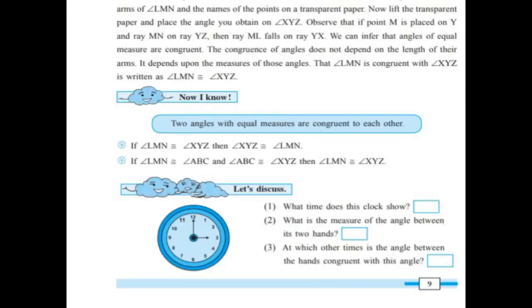You have to observe the clock now and write correct answers in the boxes. What time does this clock show? Correct answer is 3 o'clock. What is the measure of the angle between its two hands? Answer is 90 degrees.